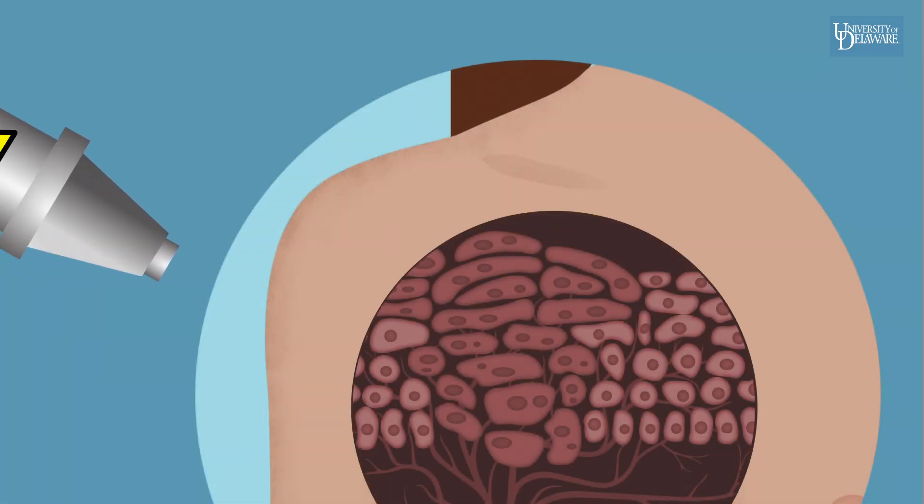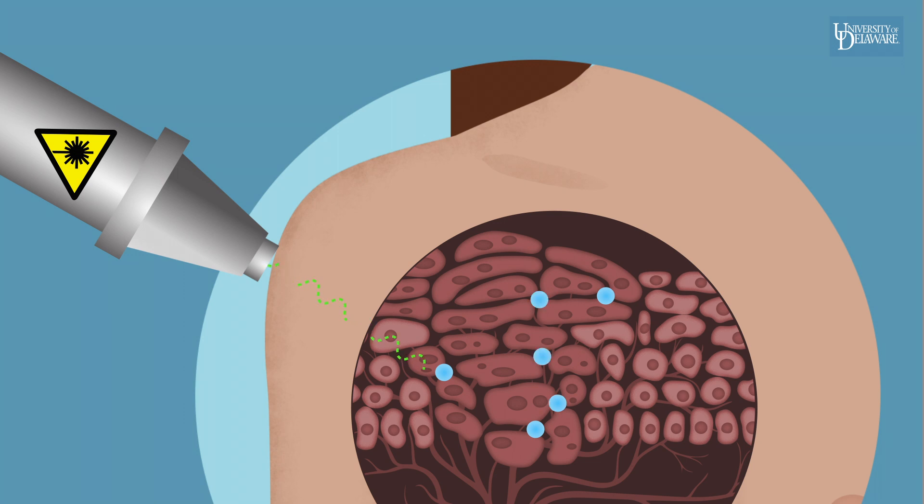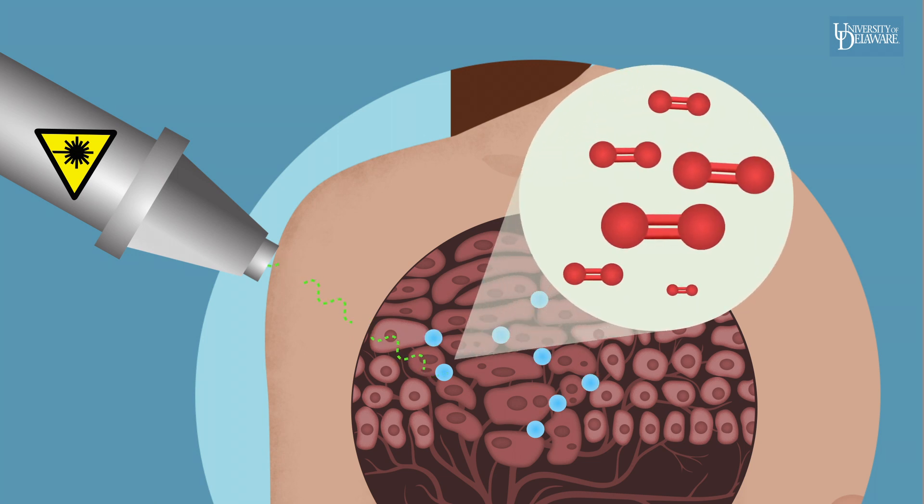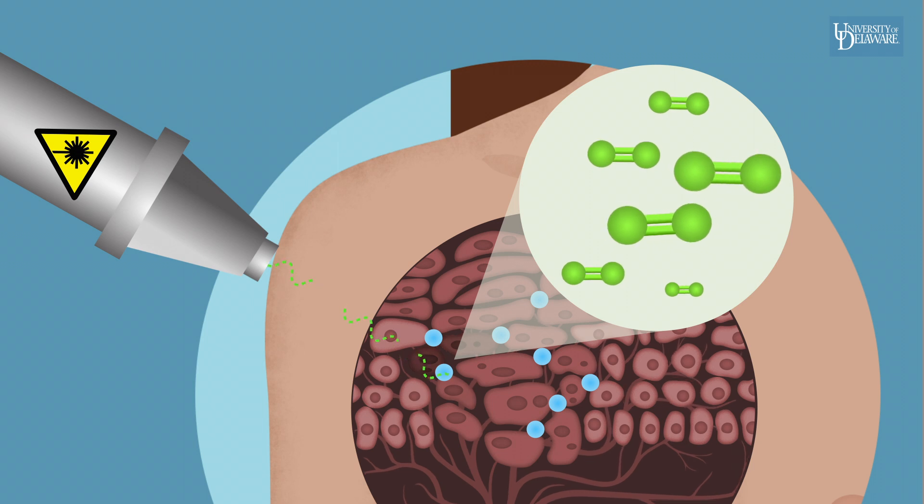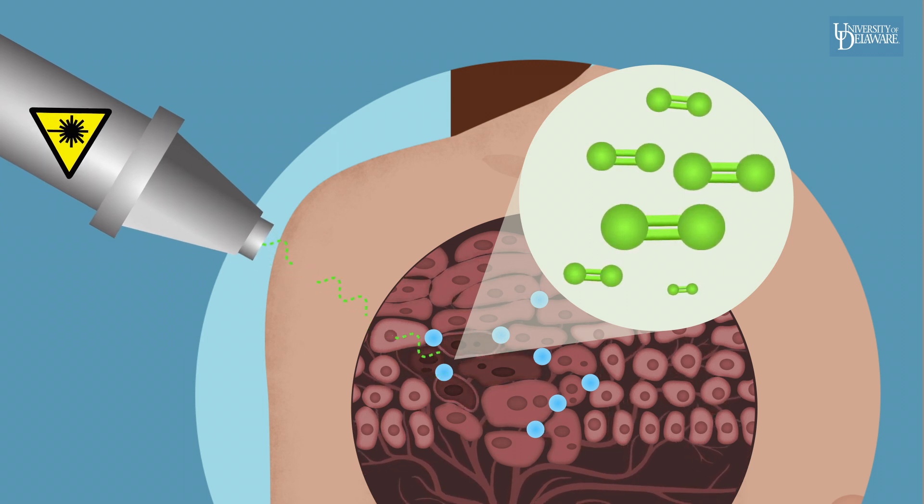In photodynamic therapy, lab-created photosensitizers reach the tumor site the same way, but they react to light by producing a toxic form of oxygen that kills the cancer cells.